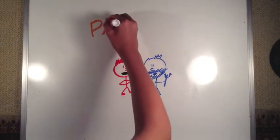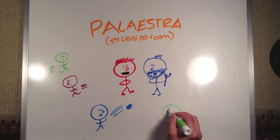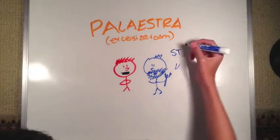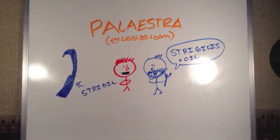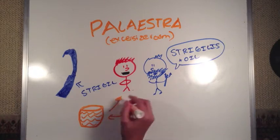This is the palaestra, the exercise room. Here you can play games, run, and stay healthy. Before your run, you're supposed to put on oil that you can scrape off with a strigilis to scrape off all of the dirt captured during your workout.